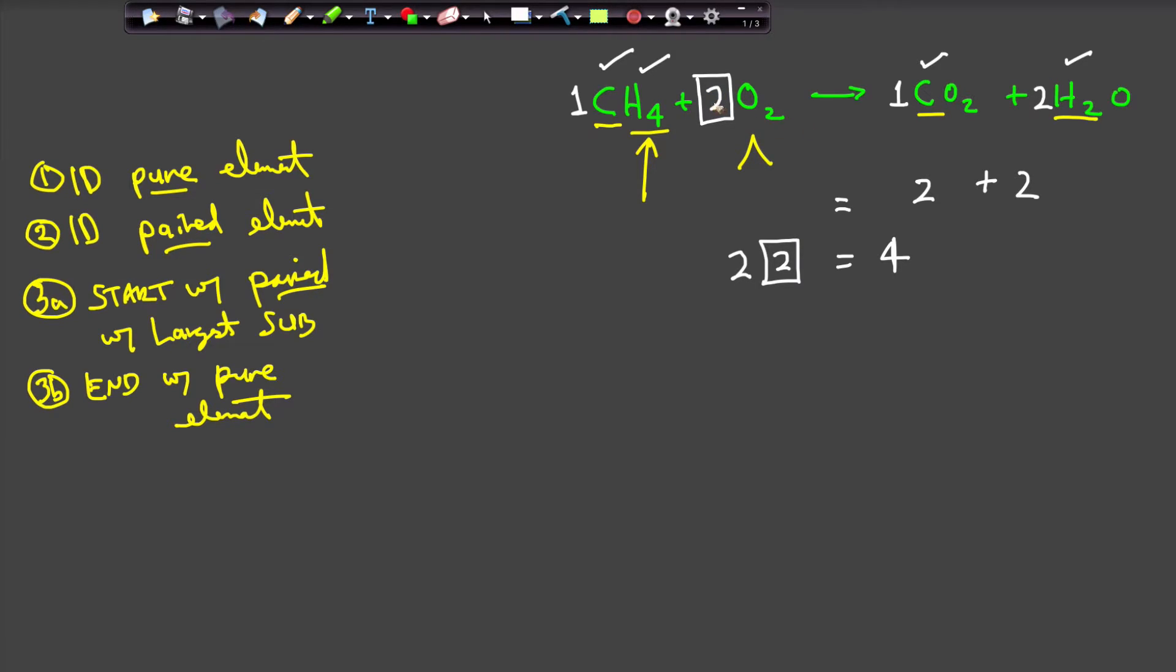And I can do a double check. That's a total of two times two is four oxygens. And how many do I have on this side of the equation? There's two. And there's two more. So everything balances out.